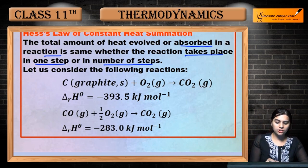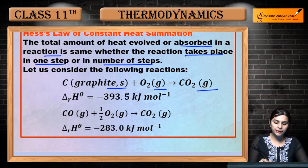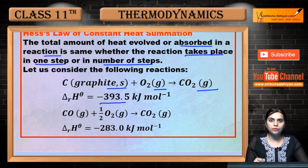Suppose you have seen this reaction - graphite is burned with oxygen in the presence of carbon to produce carbon dioxide gas, and the enthalpy change is minus 393.5 kJ per mole.